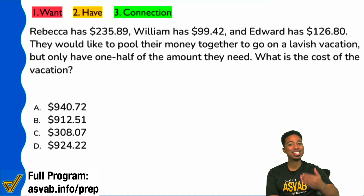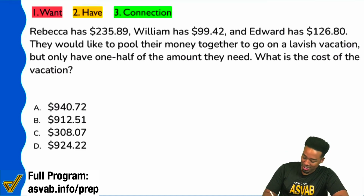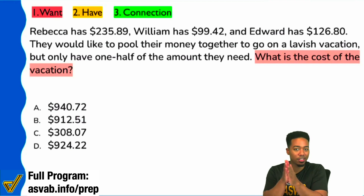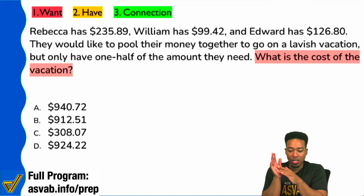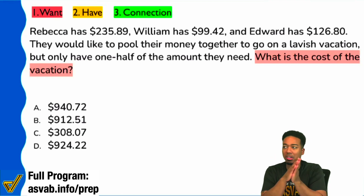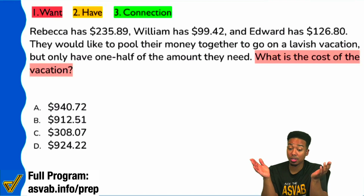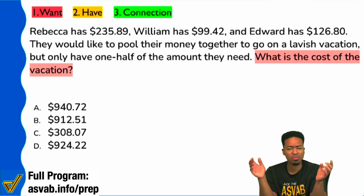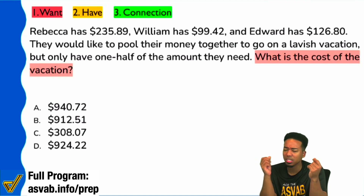Let's read the question sentence first. It says: what is the cost of the vacation? So everyone, even though we haven't read the entire problem start to finish, we can all agree that there's a vacation and we're trying to pay for it. What we're looking for is the cost of a vacation.